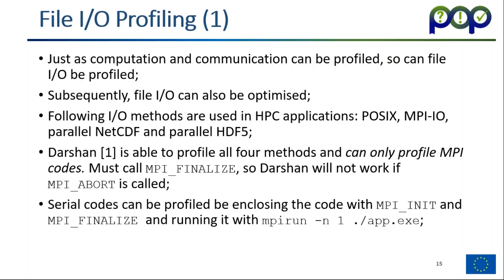Just as computation and communication can be profiled, so can file I/O — and it can subsequently be optimized. In HPC applications you can have POSIX I/O, MPI I/O, Parallel NetCDF, and Parallel HDF5. Darshan is able to profile all four methods, but it can only profile MPI codes, so your code must call MPI_Finalize. If you call MPI_Abort, Darshan will not create the trace file. Serial codes can also be profiled, but you must enclose them with MPI_Init and MPI_Finalize and run with a single process.